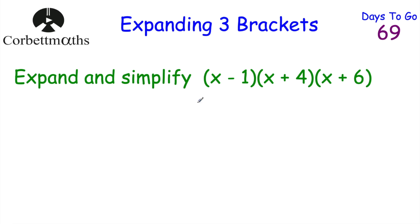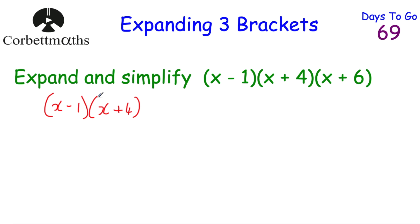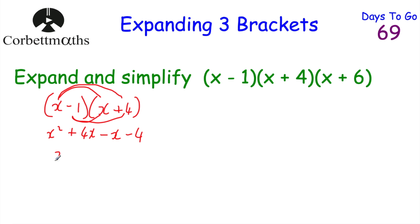Now let's have a look at expanding three brackets. We've been asked to expand and simplify (x − 1)(x + 4)(x + 6). What we need to do is expand two brackets first, get our answer, and then multiply that by the third bracket. I'll start by multiplying the first two: (x − 1)(x + 4). x times x is x squared; x times 4 is plus 4x; minus 1 times x is minus x; minus 1 times 4 is minus 4. Collecting like terms: 4x minus x is 3x. So (x − 1)(x + 4) = x² + 3x − 4.